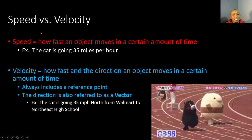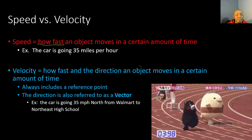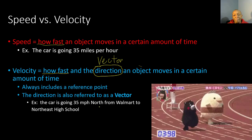Now let's take a look at speed versus velocity. Speed is how fast an object moves in a certain amount of time — for example, a car going 35 miles per hour means that for every hour the car is traveling 35 miles. Velocity is how fast and the direction an object moves in a certain amount of time. The key difference: speed talks about how fast, but velocity talks about how fast and the direction. Velocity also always includes a reference point, and direction is referred to as a vector quantity. For example, the car is going 35 miles per hour north from Walmart to Northeast High School.